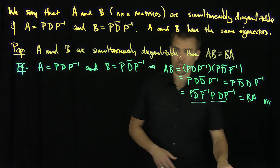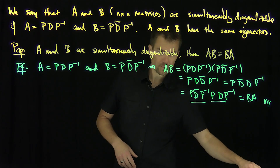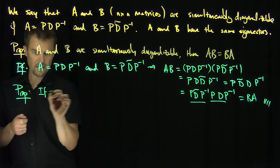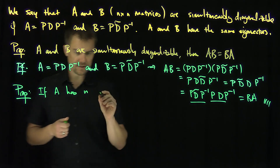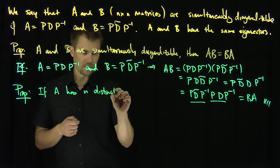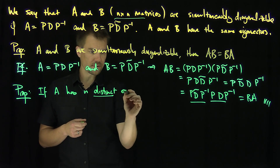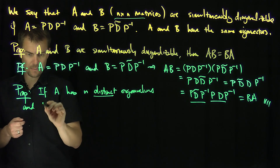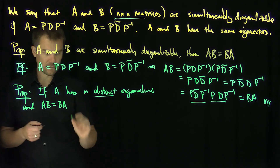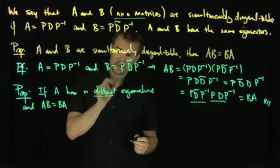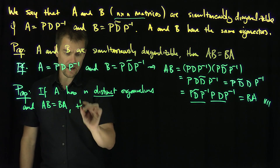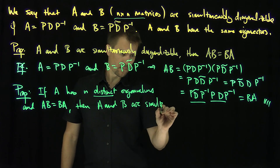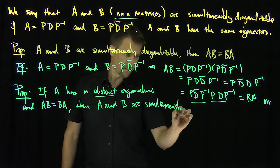Now there's a partial converse to this, which requires a few more conditions. The partial converse proposition states: if A has n distinct eigenvalues, they're n by n matrices, and AB equals BA — in other words, if they commute and A has n distinct eigenvalues — then A and B are simultaneously diagonalizable.